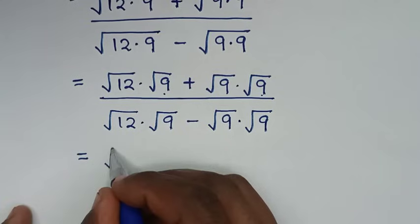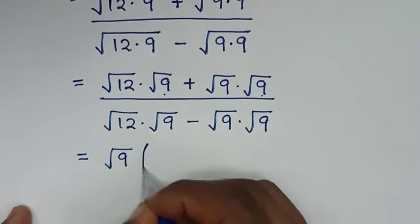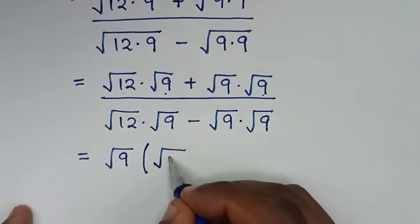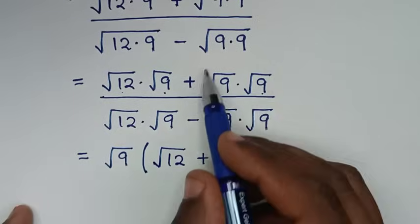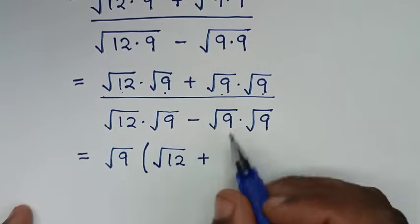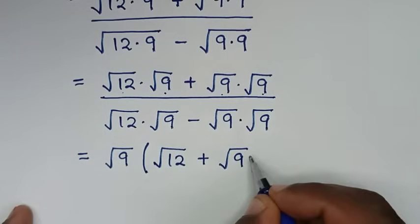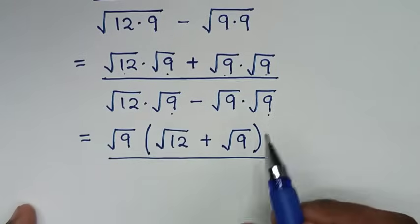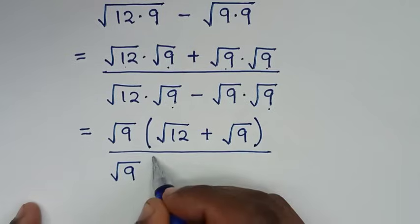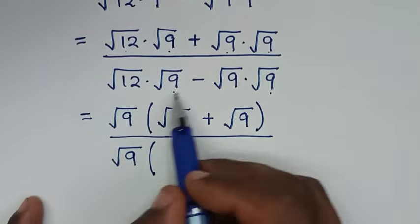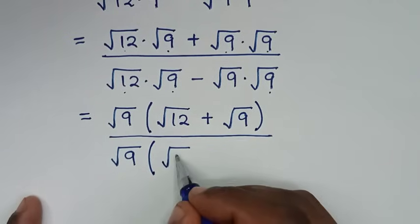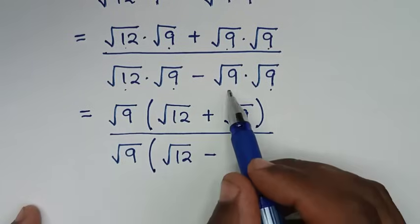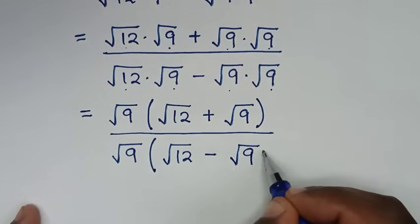From here, square root of 9 is common in the numerator, so we take square root of 9 out of the bracket: square root of 9 times (square root of 12 plus square root of 9). In the denominator, square root of 9 is also common, so we take square root of 9 out: square root of 9 times (square root of 12 minus square root of 9).